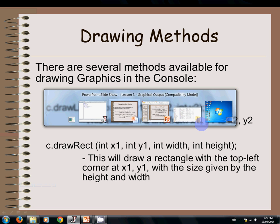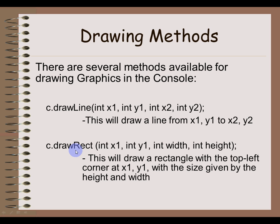The second method we can work with is called drawRect. And again, we provide it four parameters. This time, you're giving the x, y location for the top left-hand corner, and then the width and height of the rectangle you want to draw.